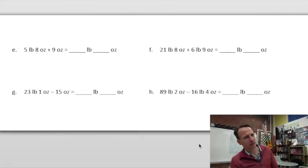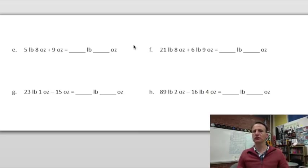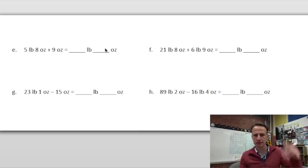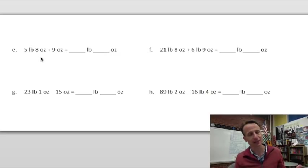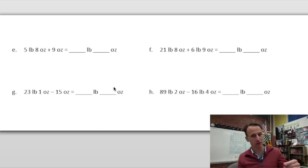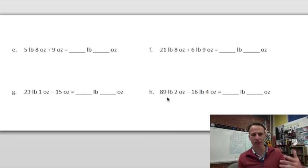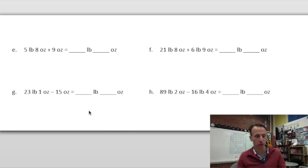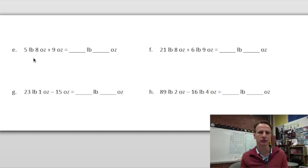The next four problems follow the same pattern but with slightly more difficulty. We have pounds-and-ounces plus ounces, pounds-and-ounces plus pounds-and-ounces, and two subtraction problems mirroring those. Problem 1e: five pounds eight ounces plus nine ounces.